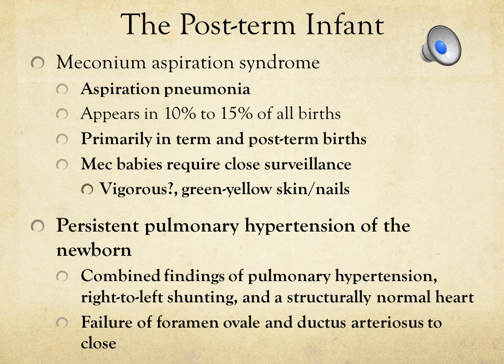If meconium was aspirated in utero, the fetus may develop persistent pulmonary hypertension of the newborn, or PPHN, also called persistent fetal circulation due to reversion of fetal circulation pathways. Combined findings of pulmonary hypertension, right-to-left shunting, and a structurally normal heart are expected. Any interference with normal fetal-to-extrauterine transition may precipitate PPHN. Presenting symptoms of cyanosis and tachycardia can progress rapidly to severe respiratory compromise and acidosis. Management is based upon the underlying cause.